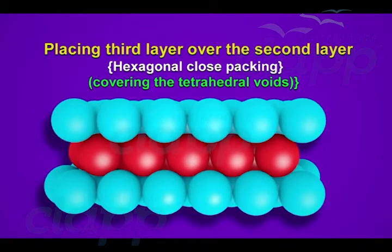When a third layer of two-dimensional hexagonal close-packed layer is placed over the second layer, there are two possibilities. The first possibility is covering the tetrahedral voids.